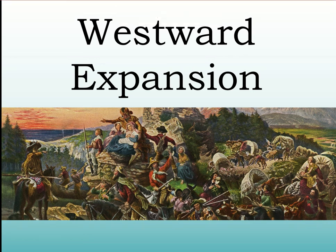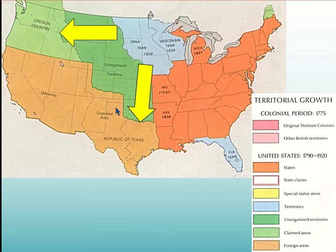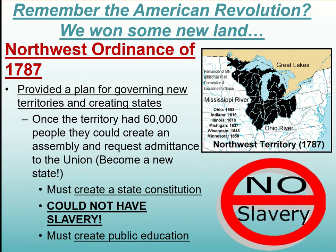So, westward expansion. When we are expanding west, we are talking at this point in time about the Oregon Country and all this area that is from Mexico. Some of this is going to have some review because we're talking about all expansion of land. This is back from the American Revolution — the Northwest Ordinance.